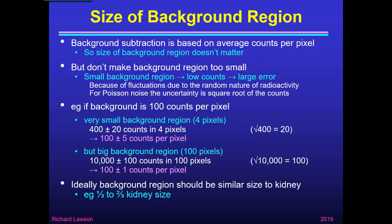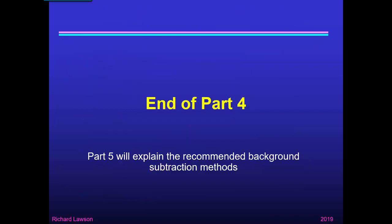Ideally the background region should be similar in size to the kidney region. It doesn't have to be exactly the same size — something between one-third and two-thirds of the kidney size is usually quite reasonable. That's the end of part 4. In part 5 I go on to explain the recommended background subtraction methods.